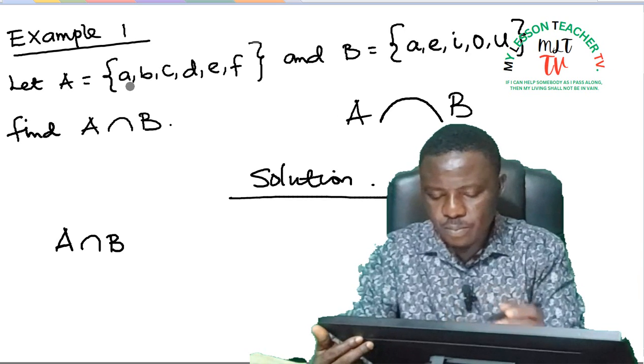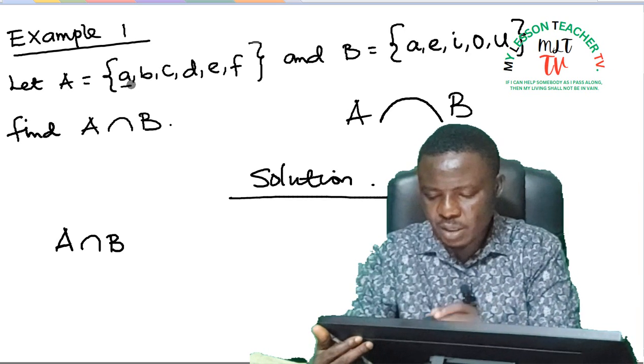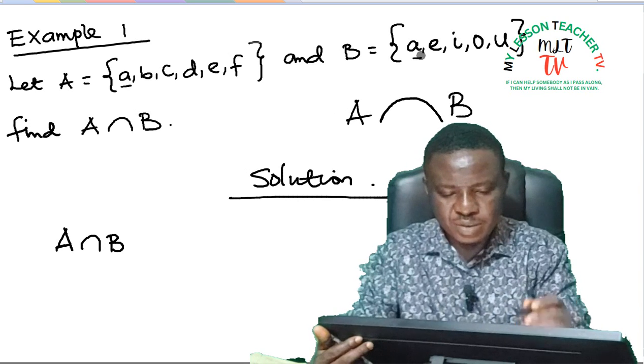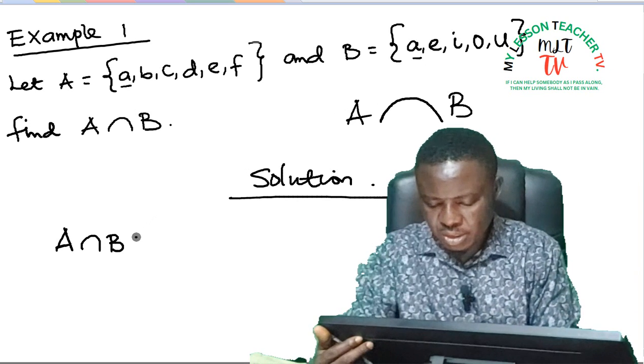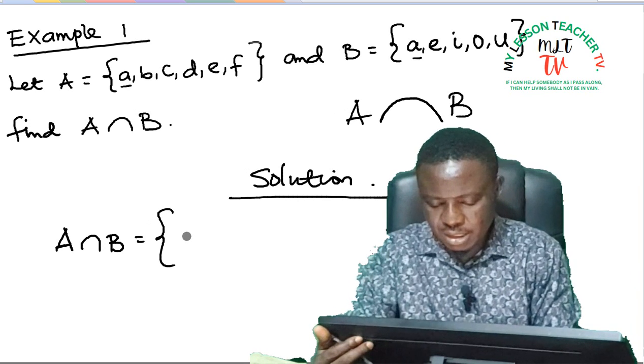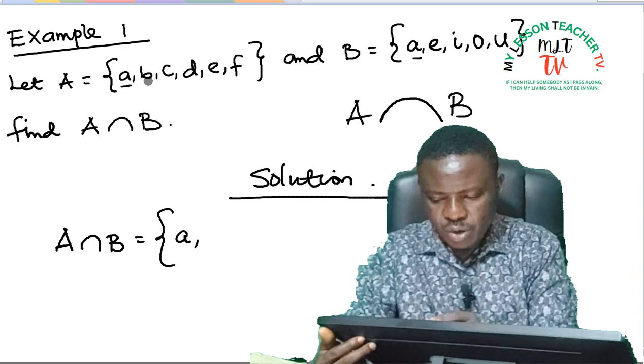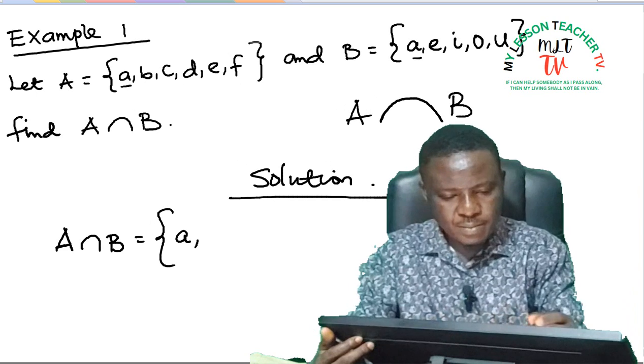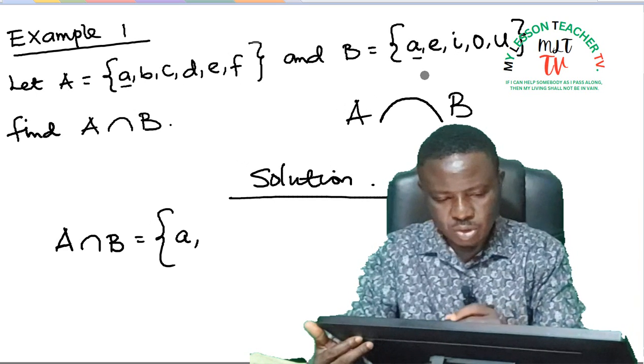So in A, we have to compare the element one at a time. Do we have A in set A and B? Yes. So that is one of the elements in the intersection. B—we have B in set A but not in set B, so it is not.